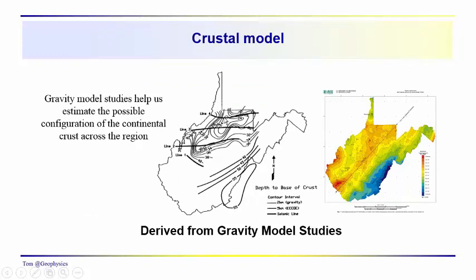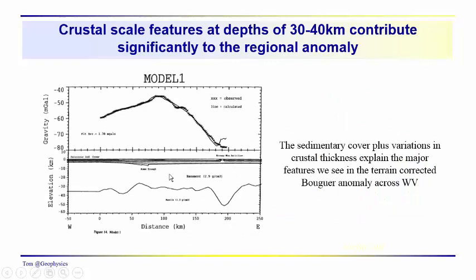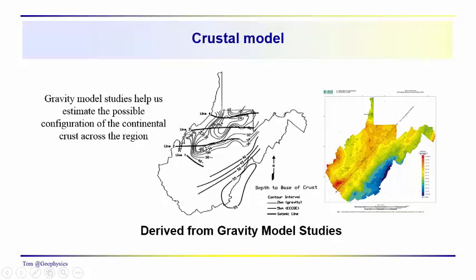And we could run a series of models using that idea and model the thickness of the crust, and that's what we've done here. We can see that up in this area where things are getting higher, we're seeing a thinner crust. Over here where the anomaly is lower, we're getting a much thicker crust. So we can see some changes in the crustal thickness based just on the gravity modeling.